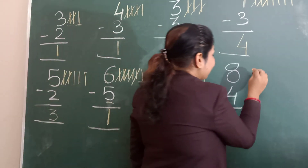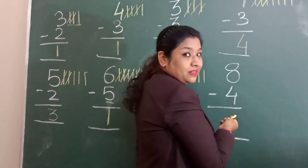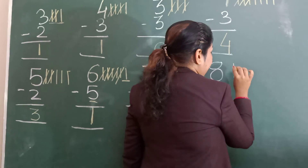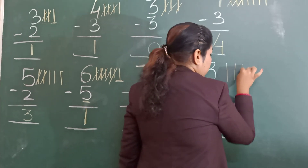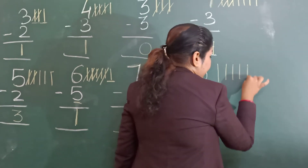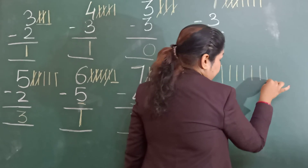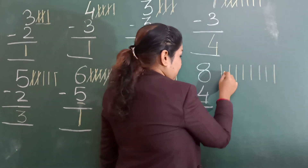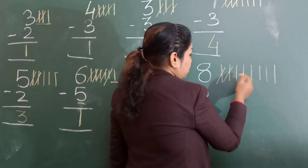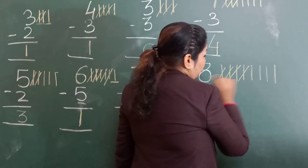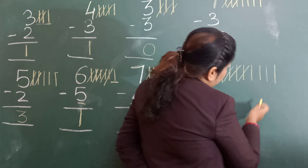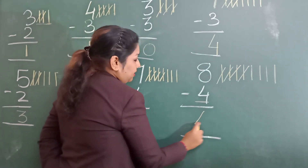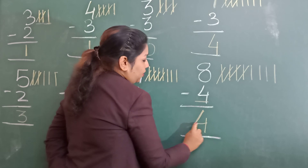Isn't it interesting? We draw 1, 2, 3, 4, 5, 6, 7, 8 lines. And how many lines you will cut? 4 — 1, 2, 3, 4. Come on, let's see how many lines remain: 1, 2, 3, 4. And the answer is 4.